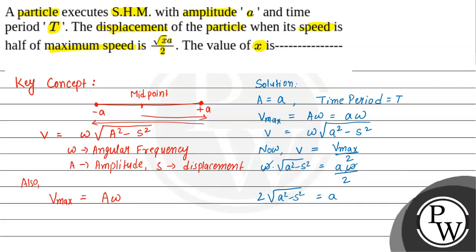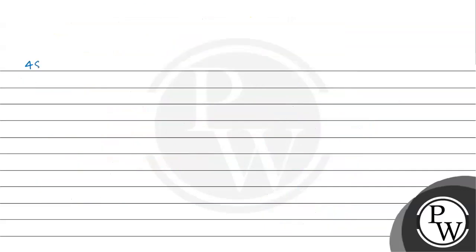Now squaring both sides: 4 times (a squared minus s squared) = a squared. This becomes 4a squared minus 4s squared = a squared. Rearranging both sides: 4s squared = 3a squared. Therefore, s squared = (3/4) a squared, so s = (root 3 / 2) times a.